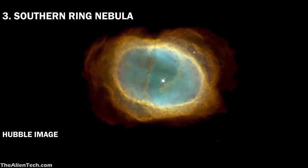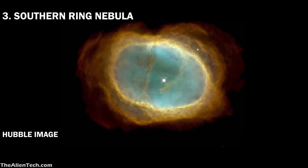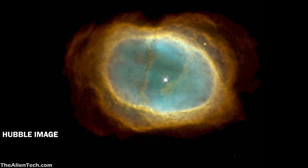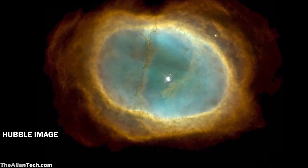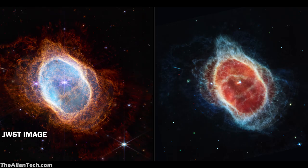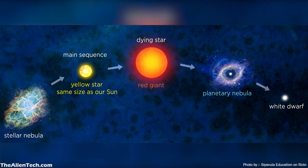The next image is of the Southern Ring Nebula, also known as the dying star. It is 2,500 light-years away and is also called a planetary nebula. The planetary nebula is the stage of a star just before it becomes a white dwarf. Our sun will die in a similar way — first it will expand to become a red giant, then it will become a planetary nebula, and then a white dwarf.